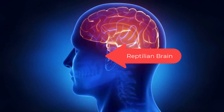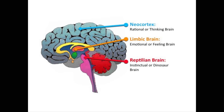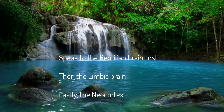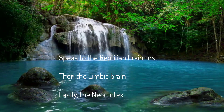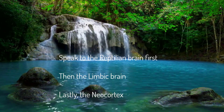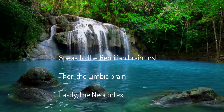The old brain — the reptilian brain — decides. It can take input from the other brains, but it can also decide faster than the blink of an eye, then use the other brains to justify that decision. The reptilian brain is visual and hardwired into the brain stem. It can make survival decisions before the other brains can even begin to process the data.